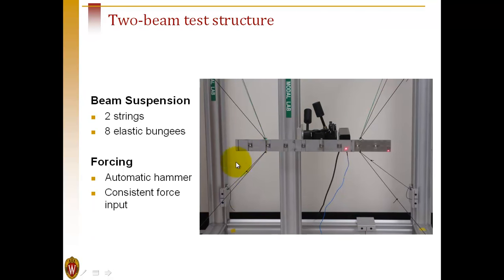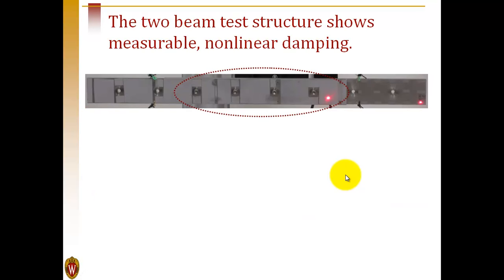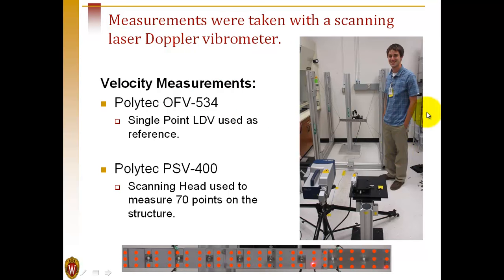A laser vibrometer was used to test the structure. We hung it from bungee cords to simulate free-free conditions, applied forcing using an automatic hammer, and then modal filtered the responses to obtain the modal damping behavior. Here's another picture of Brandon with the experimental setup. You can see the lasers that were used, a single-point laser that remained stationary, and then a scanning laser to test at a grid of points over the beams.